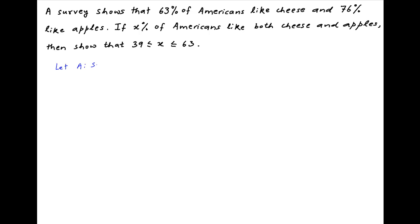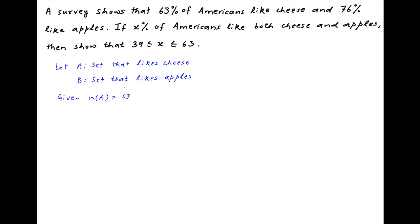Let A denote the set of people who like cheese and let B denote the set of people who like apples. We are given that the number of people in set A who like cheese is equal to 63. We are also given that the number of people in set B who like apples is equal to 76.